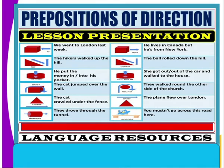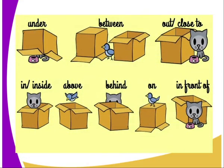'You must not go across this road' — 'across' is a preposition of direction. We can also see these clearly shown in the pictures: 'under' means below; 'between'; 'out'; 'close to' or 'next to'; 'in' and 'inside'; 'above'; 'behind'; 'on'; 'in front of' — those are all prepositions of position.